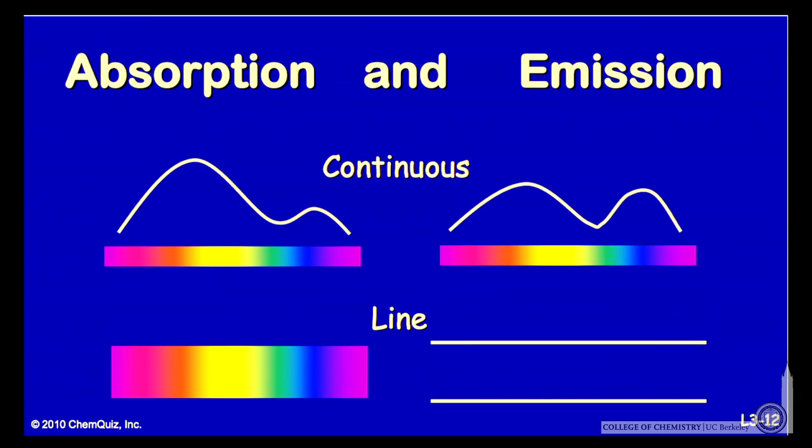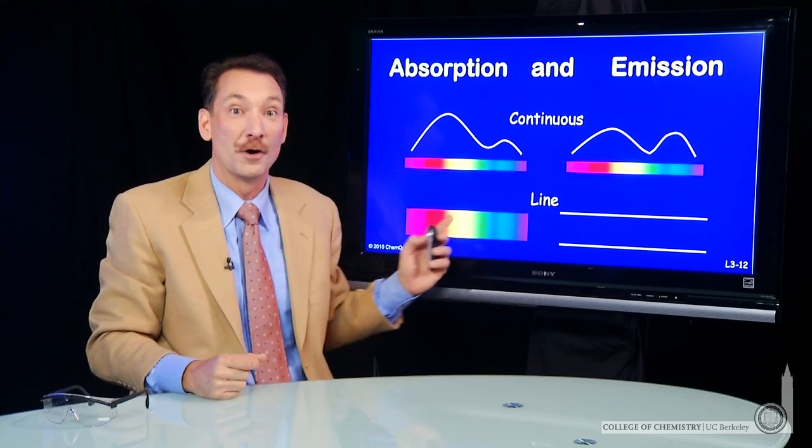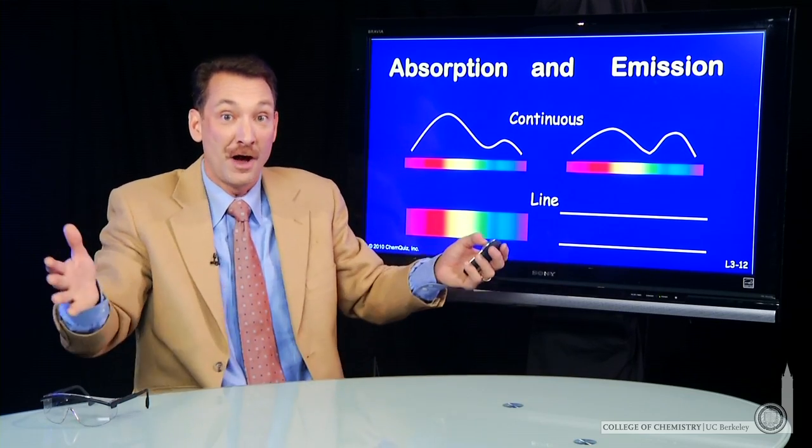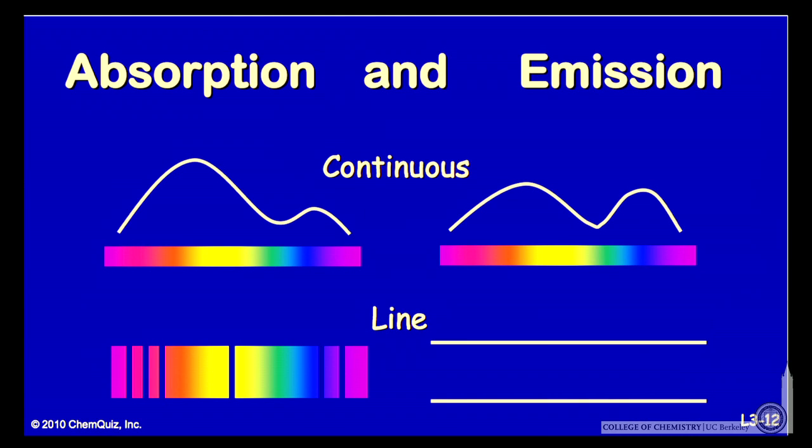Now, absorption and emission can also be discrete or line-based. That is, specific wavelengths are absorbed. So you could broadcast or have a lot of radiation hitting an object in a broadband, but only certain wavelengths are absorbed and removed from the spectrum. That's how that would look.